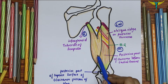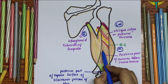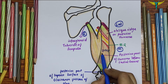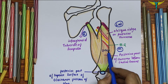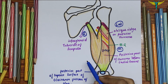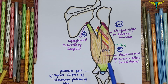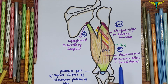The medial head of the triceps brachii is also named the deep head. A few fibers of this deep head are inserted into the posterior aspect of the capsule of the elbow joint, and they are sometimes referred to as the articularis cubiti or the subanconeus muscle.